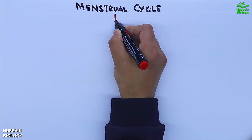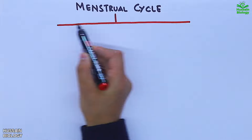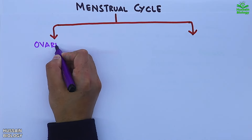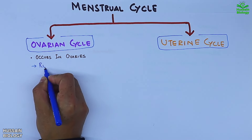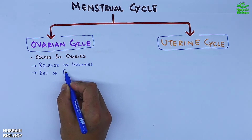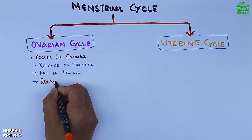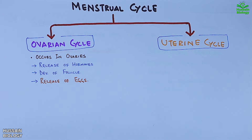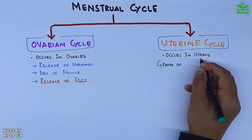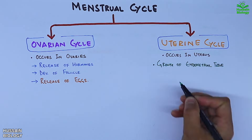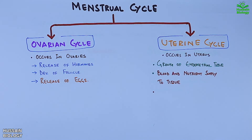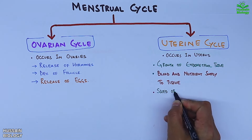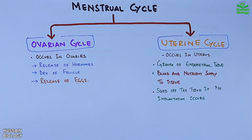The menstrual cycle is divided into two cycles: the ovarian cycle and the uterine cycle. The ovarian cycle occurs in the ovaries and involves the release of hormones, development of follicles, and release of eggs. In the uterine cycle, we get the growth of endometrial tissue, blood and nutrient supply to the tissue, and shedding of the tissue if no implantation occurs.